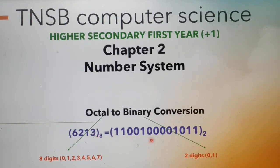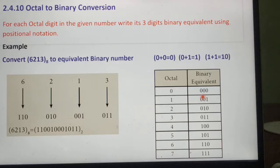Next, binary — bi means 2. Here we have the combination of 2 digits, 0 and 1, so its base is given as 2.